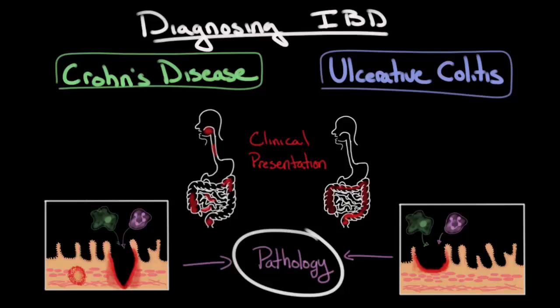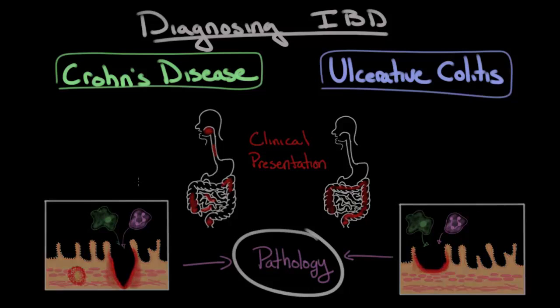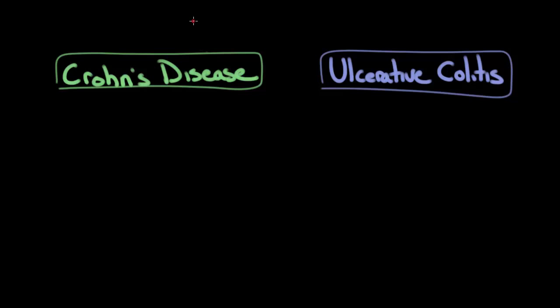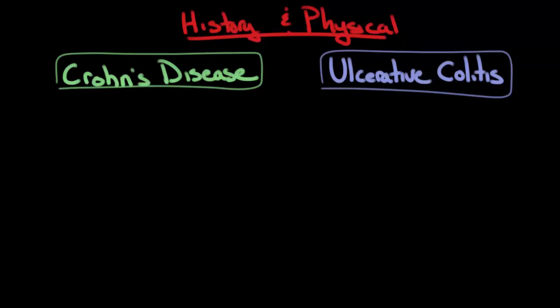Instead, the diagnosis is made through a process that includes the clinical presentation, certain laboratory findings, radiographic findings, and then finally the pathologic diagnosis. So let's start with the history and physical exam. The location of disease, in general, will dictate the clinical presentation. So where do these lesions in Crohn's disease and ulcerative colitis occur?